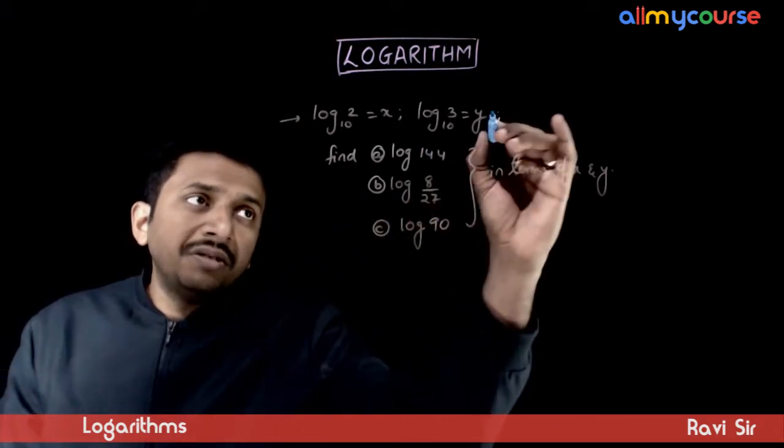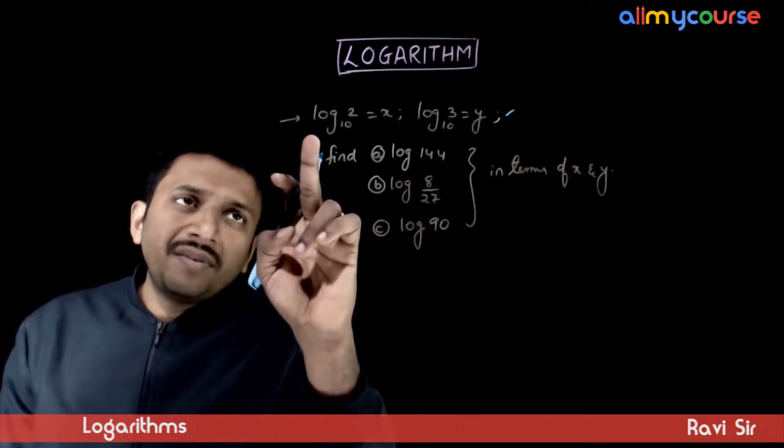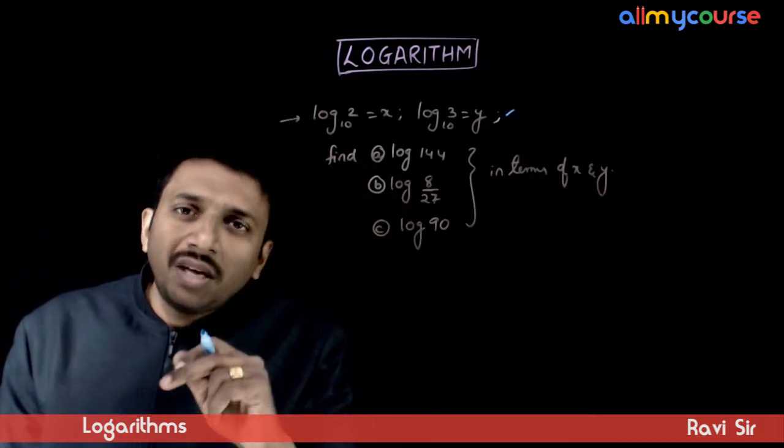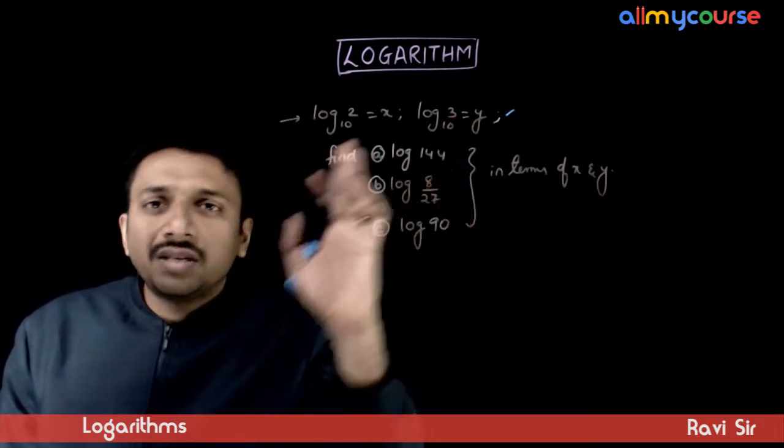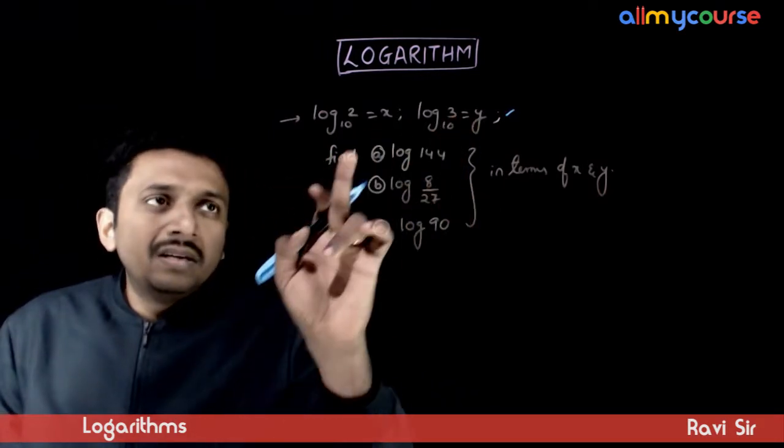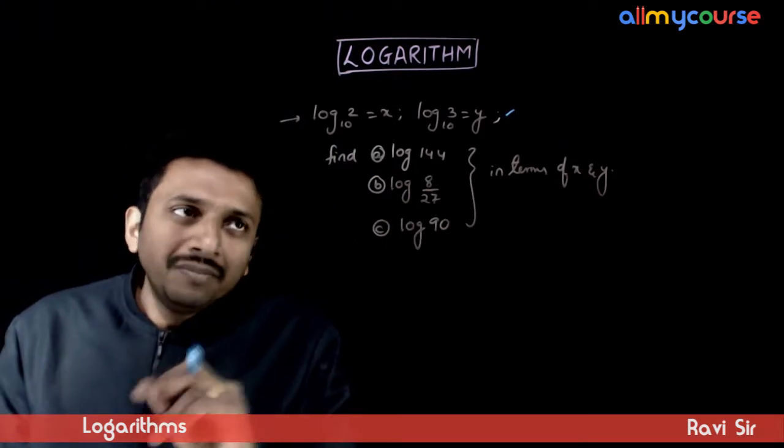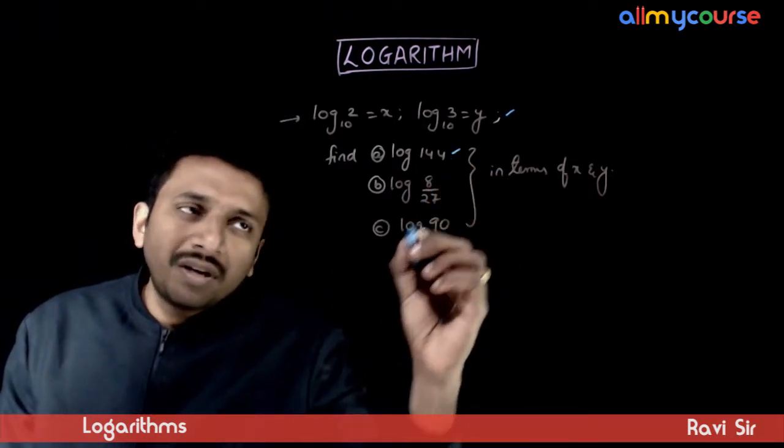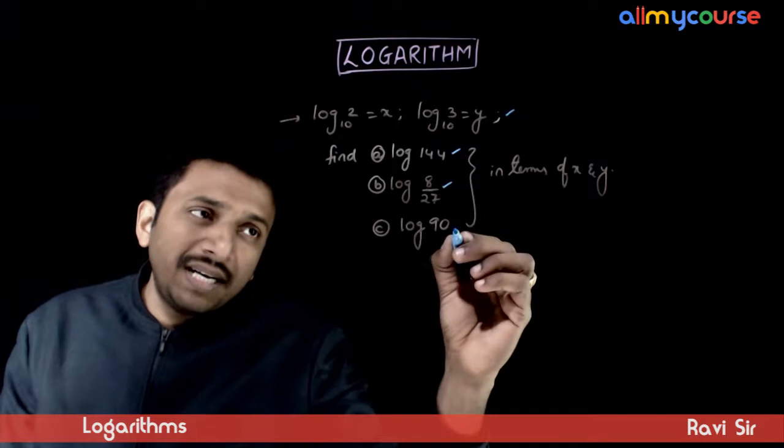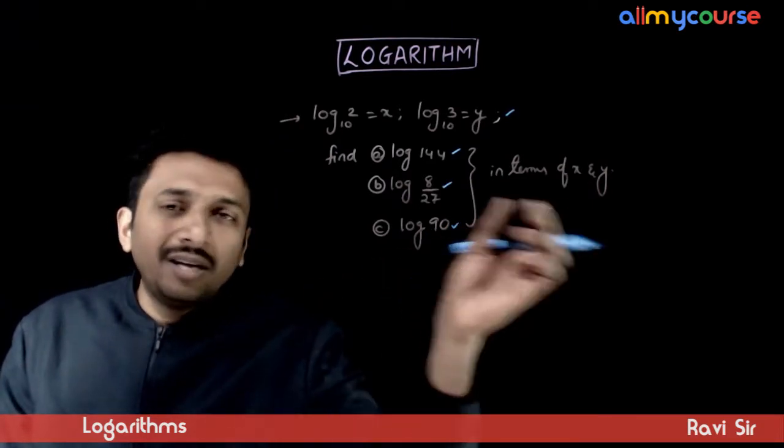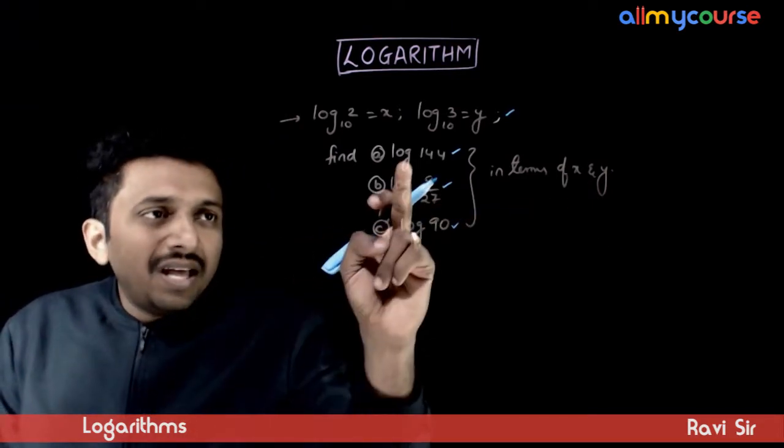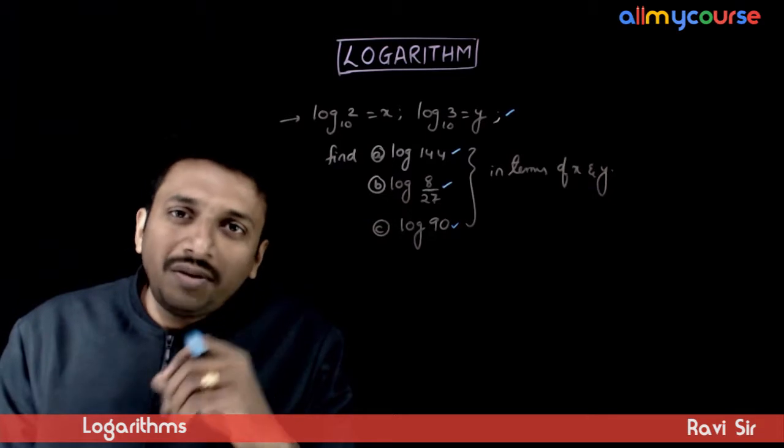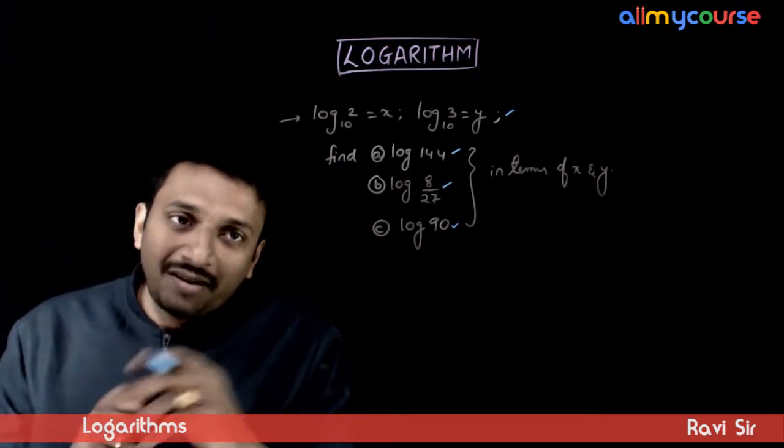Let us look at a sample question on logarithms. It is given that log 2 to the base 10 is equal to x and log 3 to the base 10 is equal to y. These two are given to you. Can you find log 144, log 8 by 27, and log 90 in terms of x and y? Here base is not given, so we need to take the default base as 10.